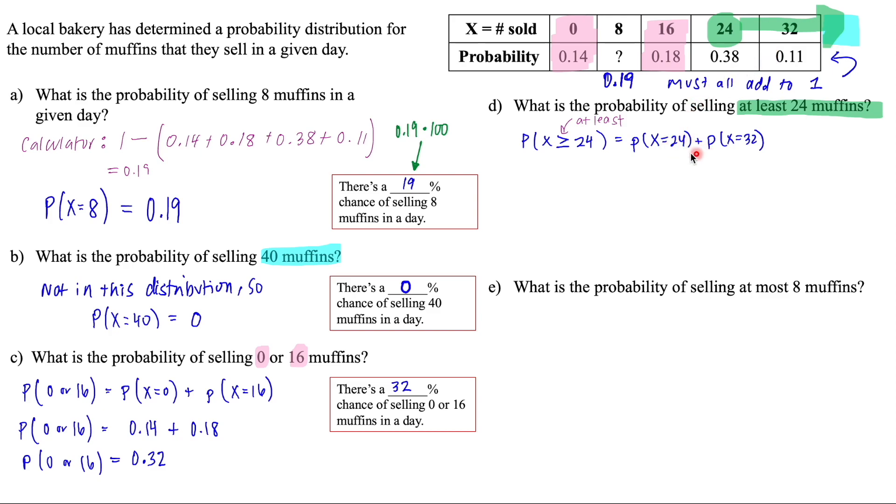So we're going to add up those two probability values and that's the 0.38 plus 0.11 and we get 0.49. So there's a 49% chance of selling at least 24 muffins in a day.